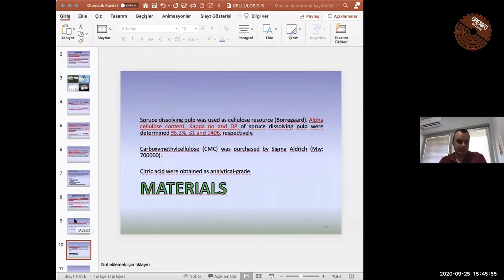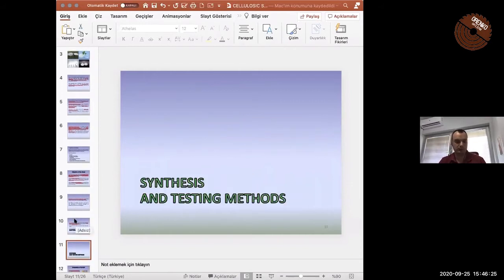What about materials? We used spruce dissolving pulp. Its alpha cellulose content was 95.2%. Also, couple number was determined too. It's about under one and the polymerization degree was 1,406. Commercial carboxymethyl cellulose and silica acid were purchased. Next one, synthesis and testing methods.